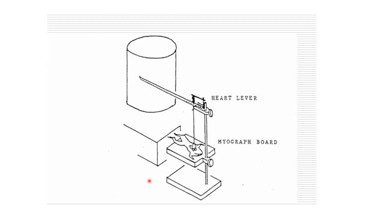This is the complete setup — the kymograph, the myograph board with stand, and the Starling's heart lever. The frog is laid down here on its ventral aspect so we can reach the heart. This is the ventricle, and from the ventricle the thread is tied here. The other end of the thread is fixed with the Starling's heart lever, so when the frog's heart contracts and relaxes, the recording is obtained and we can trace the normal cardiogram.